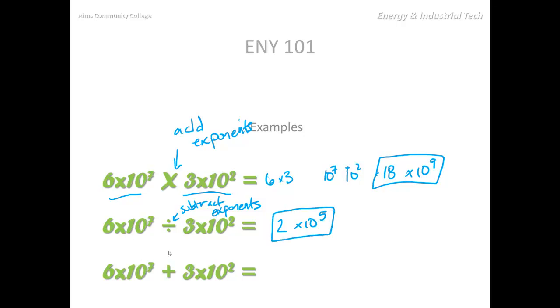For addition and subtraction, we generally leave our exponents the same as we saw earlier. Ten to the seven greatly outnumbers ten to the two. So we don't change our exponents very much unless we have need to. So that would be sixty million plus three hundred equals sixty million three hundred.